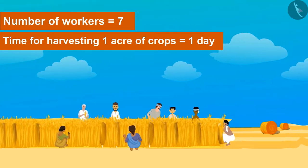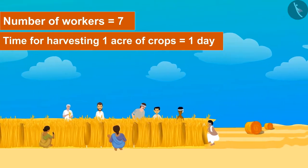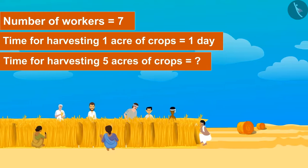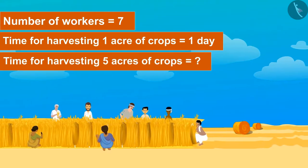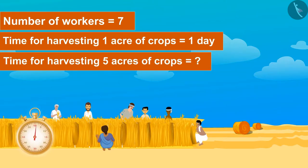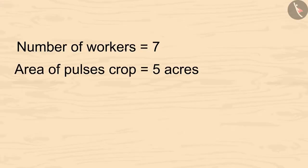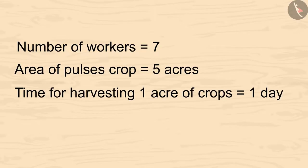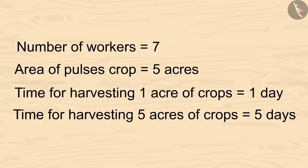So can you tell how much time will they take to harvest five acres of crops? Kids, you can pause the video and calculate it. Yes — five acres of pulses will take five days to be harvested.